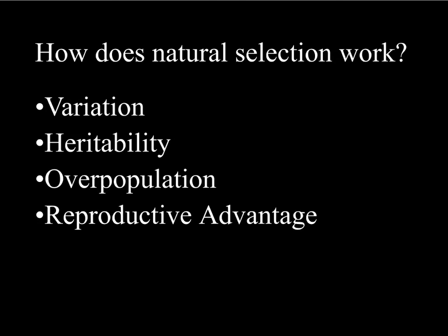First, let's review the four principles of natural selection. First is variation, so not all of the individuals within a population are the same. Second is heritability — traits can be passed down from one generation to the next, so all of those variations are genetic, or at least some of them are.